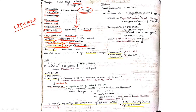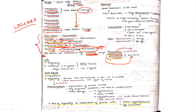Lovastatin and simvastatin are prodrugs. All statins are metabolized by CYP3A4 except fluvastatin, which is metabolized by CYP2C9. Rosuvastatin and pravastatin are not metabolized by CYP enzymes. This metabolism detail is somewhat important.